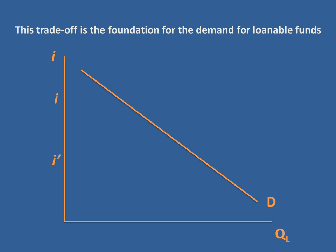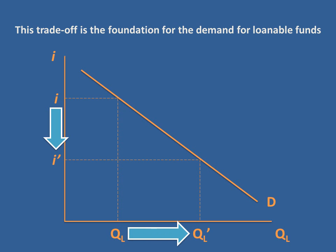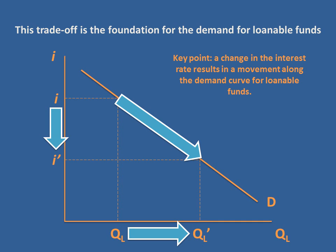In the previous example, as we lowered the interest rate, we saw more firms taking on projects, taking out more loans, and therefore more quantity of loanable funds demanded. What we notice is that when the interest rate changes, we see a movement along the demand curve for loanable funds — that's a key point. A change in the interest rate results in a movement along the demand curve; it does not cause the demand curve to shift.